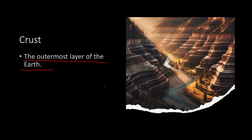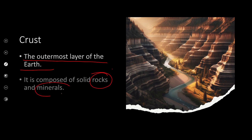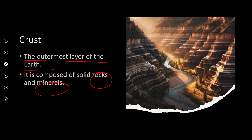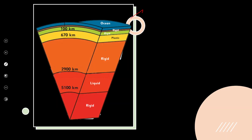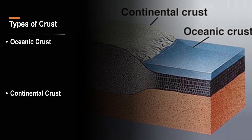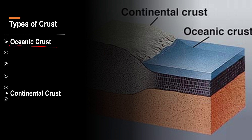The crust is made up of rocks and minerals and has two parts. The crust extends from zero kilometers to about 100 kilometers deep. The two parts are: number one, oceanic crust, and the other is continental crust. As the name suggests, oceanic crust is the part of the crust that has oceans and seas on it.